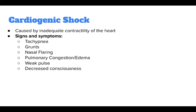Cardiogenic shock is caused by inadequate contractility of the heart. One of the key differences between hypovolemic and cardiogenic shock is the work of breathing. In both cases there will be tachypnea, but in hypovolemic shock the effort of breathing is only mildly increased. However, in cardiogenic shock, the work of breathing is often significantly increased, as evidenced by grunting, nasal flaring, and the use of accessory thorax muscles. Since the heart is pumping ineffectively, blood remains in the pulmonary vasculature, causing pulmonary congestion and edema, which can clinically be heard as crackles in the lungs and visualized as jugular vein distension.